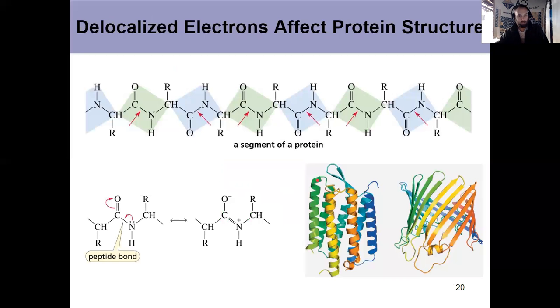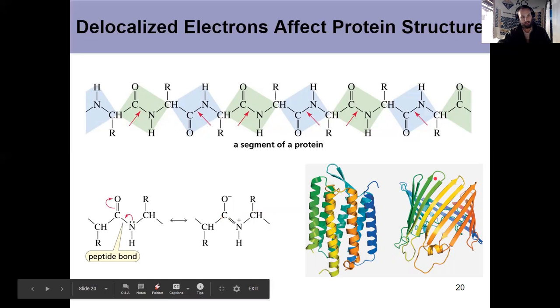And it's those delocalized electrons that affect your protein structure. The reason proteins fold into alpha helices and beta sheets, if you've heard about those in your biology classes, if not, you'll hear about them in biochemistry, it's due to delocalized electrons within peptide bonds. This bond can't freely rotate because it's not a true sigma bond, it has a resonance contributor over here. And that's why we see things fold the way they do. More of a fun fact for you.